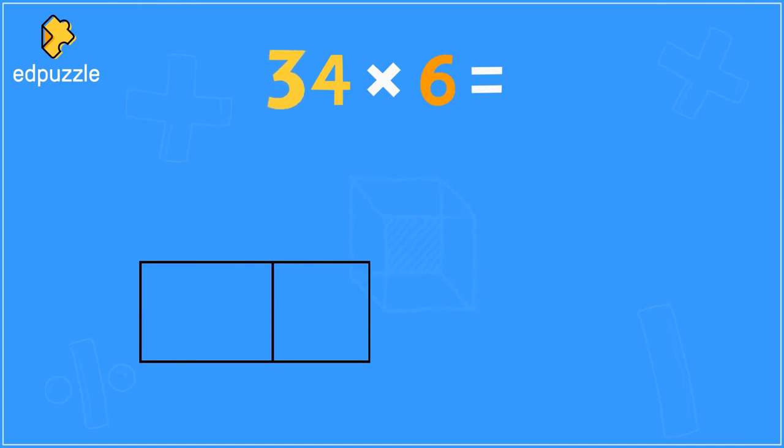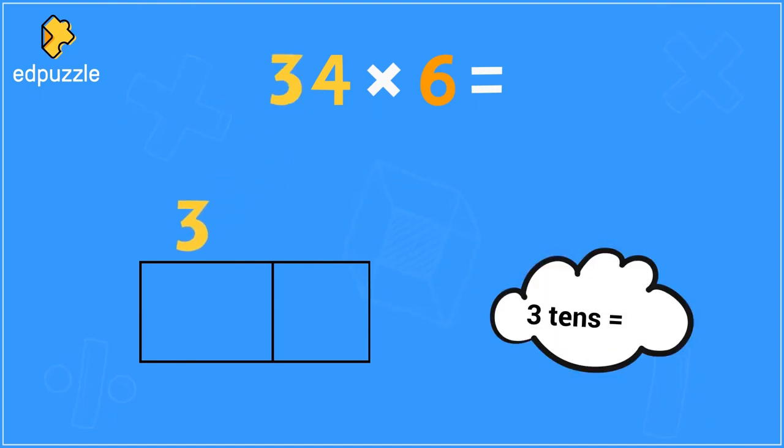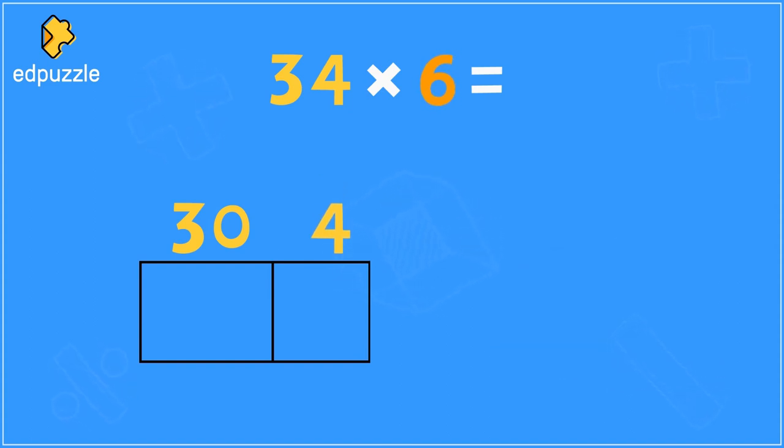Well, I will first look at the 3, which we know is 3 tens. What is the value of 3 tens? 3 tens has a value of 30. Then we could look at this 4, which is just 4 ones, or a value of 4. Now I'm multiplying all of this by 6, so I will just put the 6 on the side of the area model.